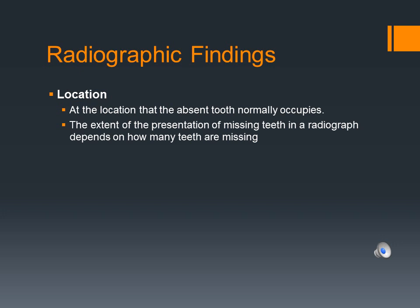The radiographic location of missing teeth is at the location that the absent tooth normally occupies. The extent of the presentation depends on how many teeth are missing. If there is a single missing tooth, it will appear localized. In the case of anodontia, it will be generalized throughout the maxilla and mandible.